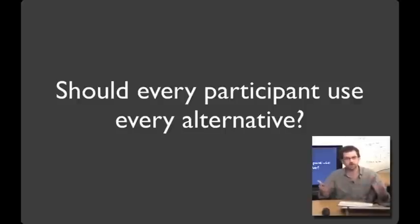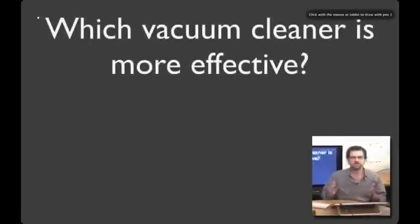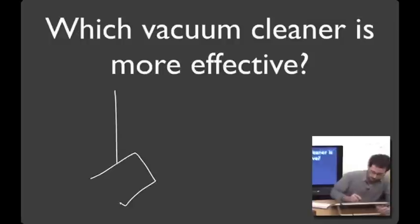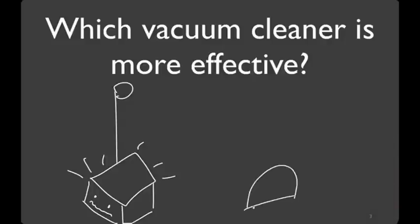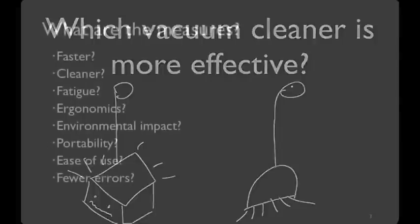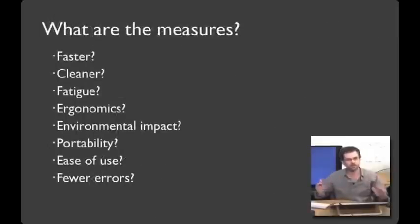To illustrate this, we're going to walk through an example and see the trade-offs that are intrinsic to different approaches you can take here. In this study, we're going to compare a smart vacuum cleaner with a more traditional vacuum cleaner. As you remember from last time, one of the first questions we should ask about this is, what are the measures?